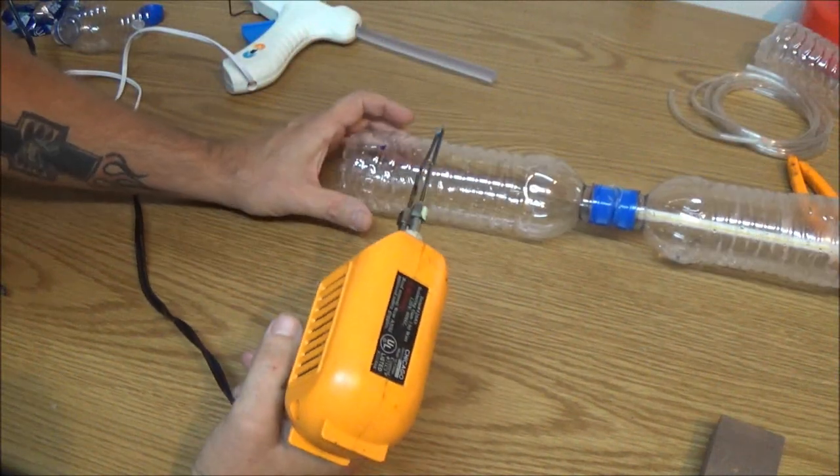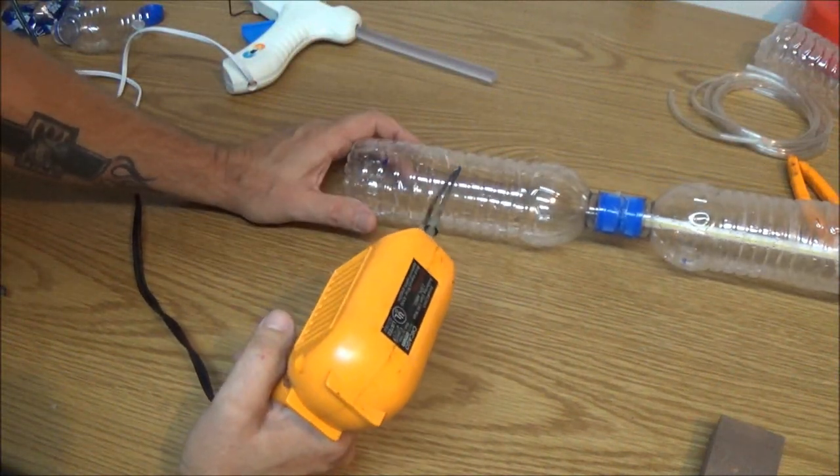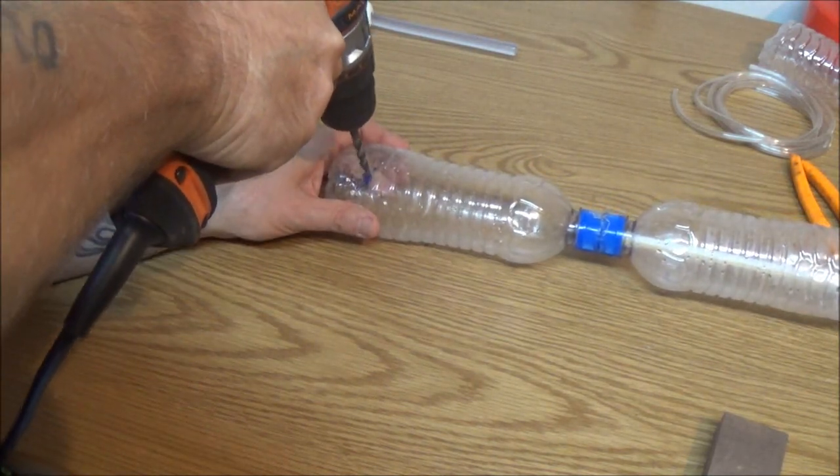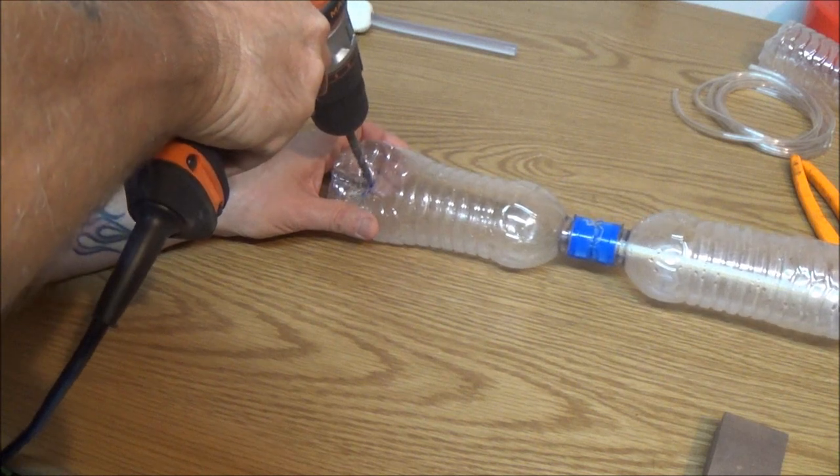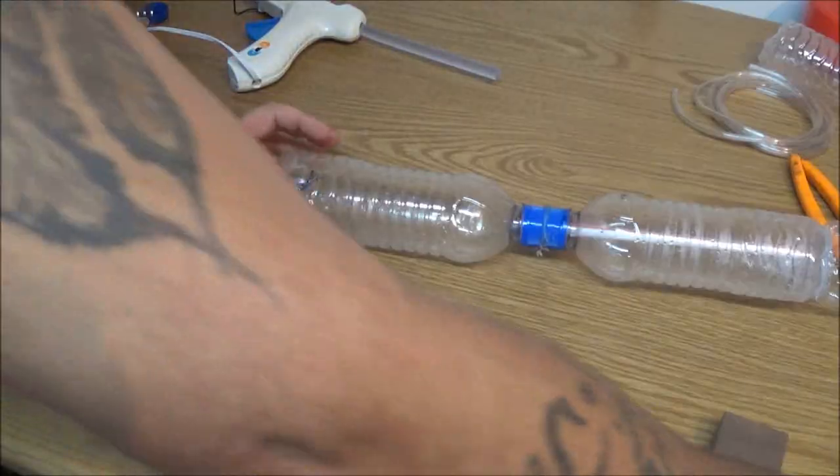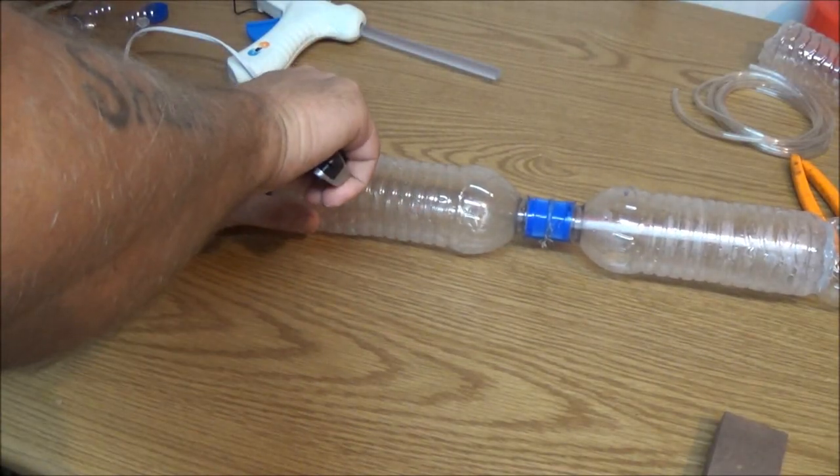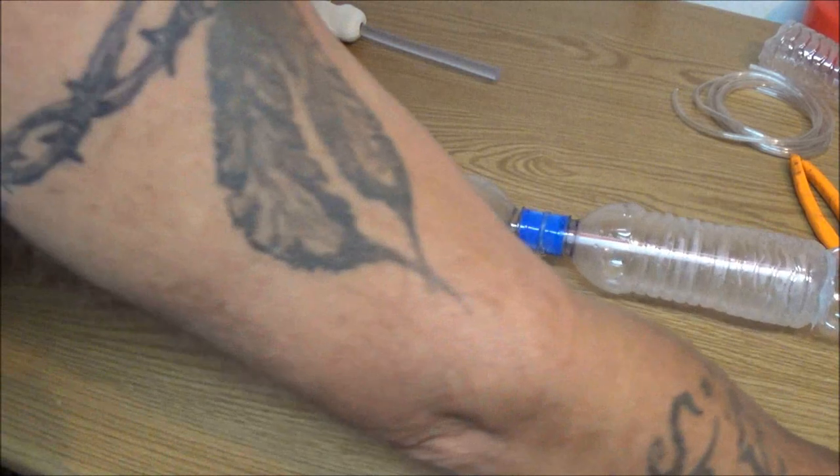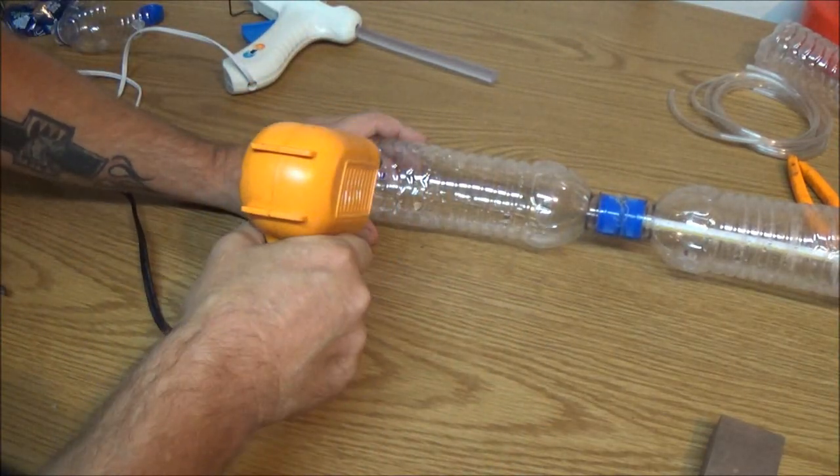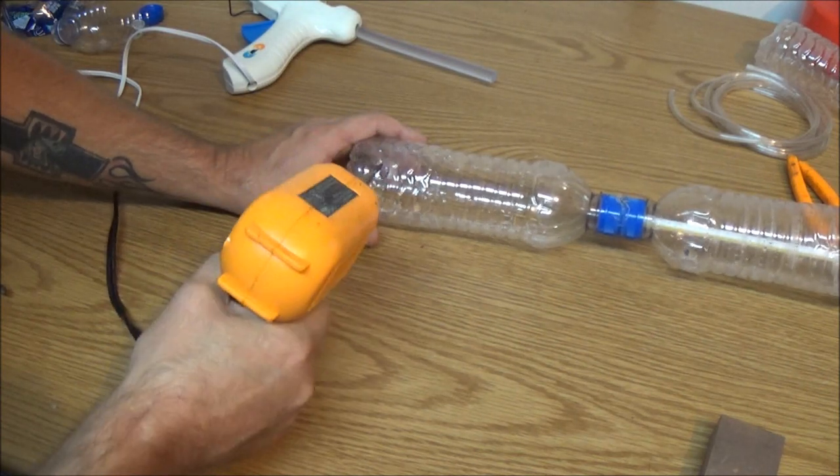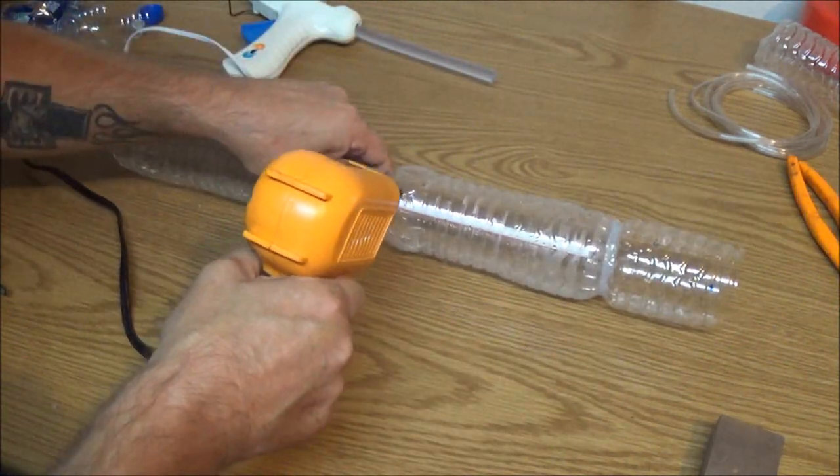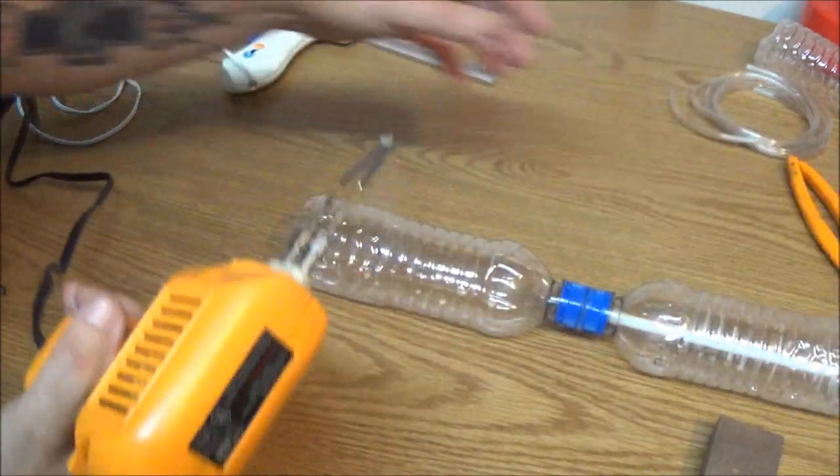All right so we've got our holes marked. I don't know if you can see that. I'm not going to use the drill because I just screwed up a bottle doing that. Yep just drill the holes. So I'm going to try to use this thing to make the holes and that's pretty damn easy. All right so there's our holes.